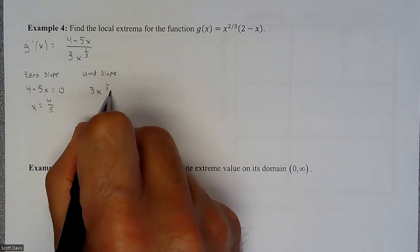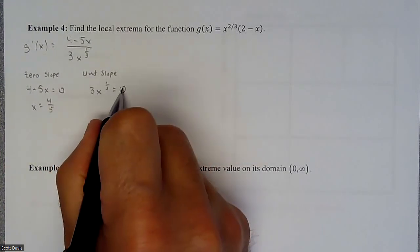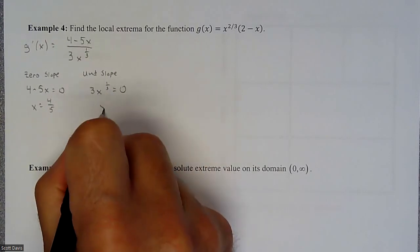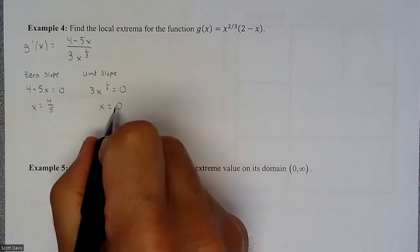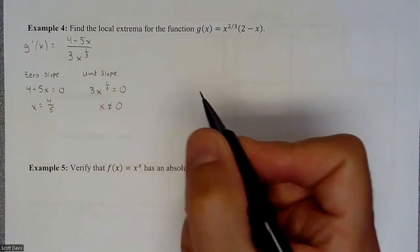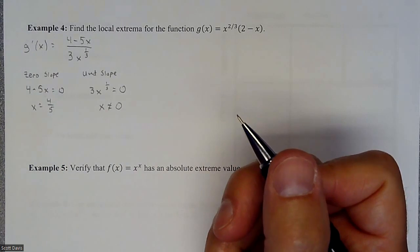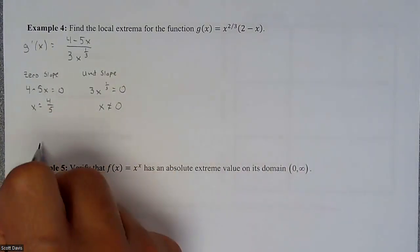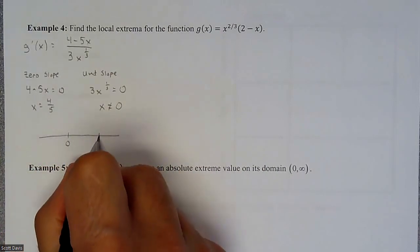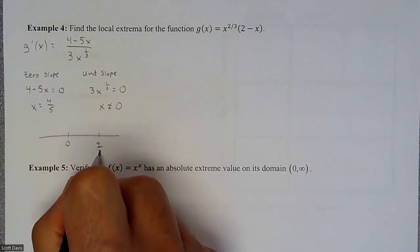And then if we set this equal to zero, the only thing that's going to get a zero, we would divide by three and cube it. We'll still get a zero. So actually, that's an undefined slope. So we don't want to plug in a zero. All right, as far as slopes go. So we have zero and four fifths.